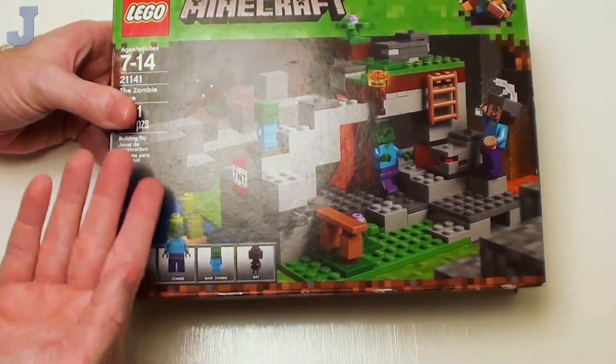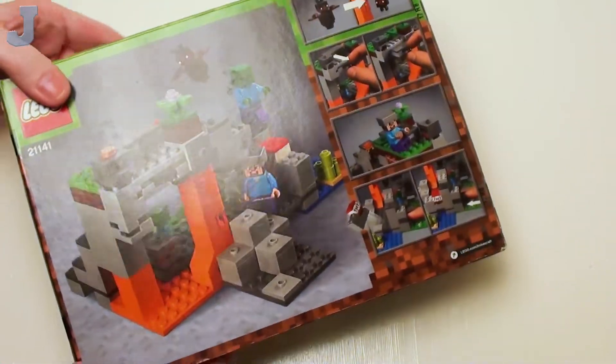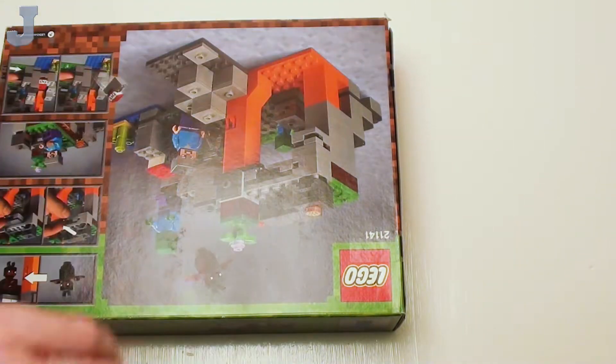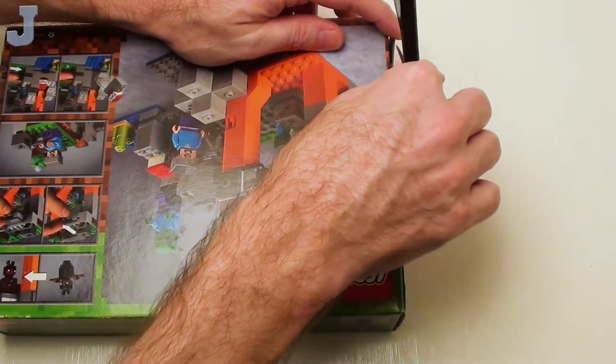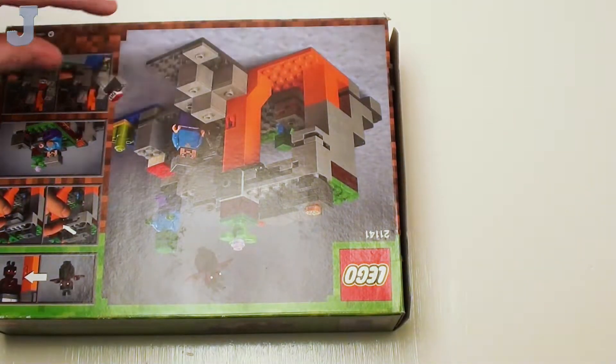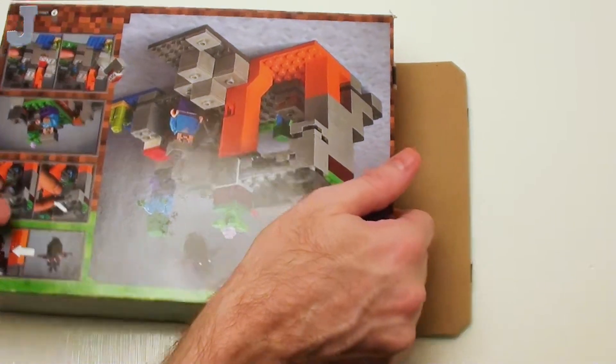And we get four minifigures and some bricks. Yeah, oh wow, this one's a shocker. It's actually taped. I was expecting some thumb pusher things, but now I have to take some small scissors to open that up. That just tells you how old this set is.